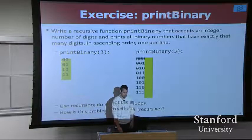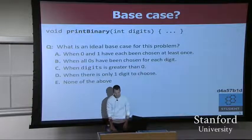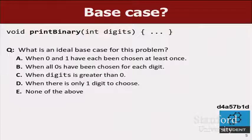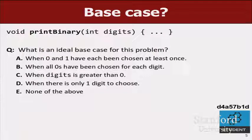So what's the Socratic question? If we're going to write a function called print binary that takes how many digits as a parameter, what's a good base case? Here are some choices - if you were writing this, what would you make your base case? Take a look and talk to your buddy if you want to.